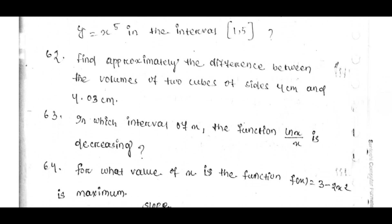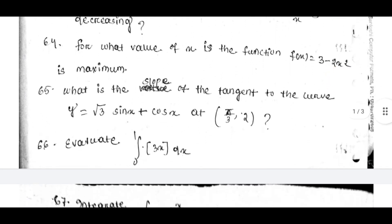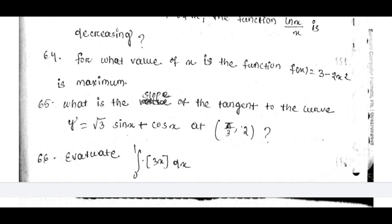Find approximately the difference between the volumes of two cubes of sides 4 cm and 4.0203 cm. In which intervals of x is the function ln x by x decreasing? For what values of x is the function f(x) equal to 3 minus 2x squared maximum? What is the slope of the tangent to the curve y equal to root 3 sin x plus cos x at π by 3? Please practice these questions.